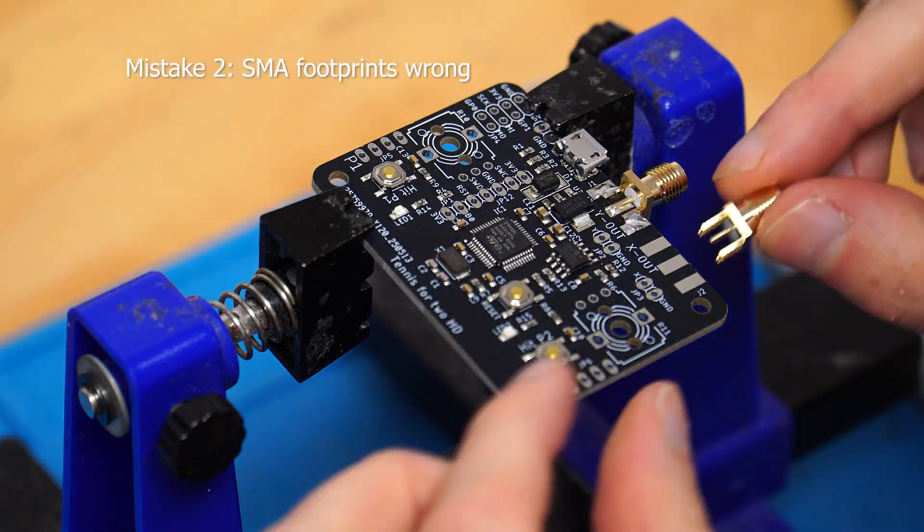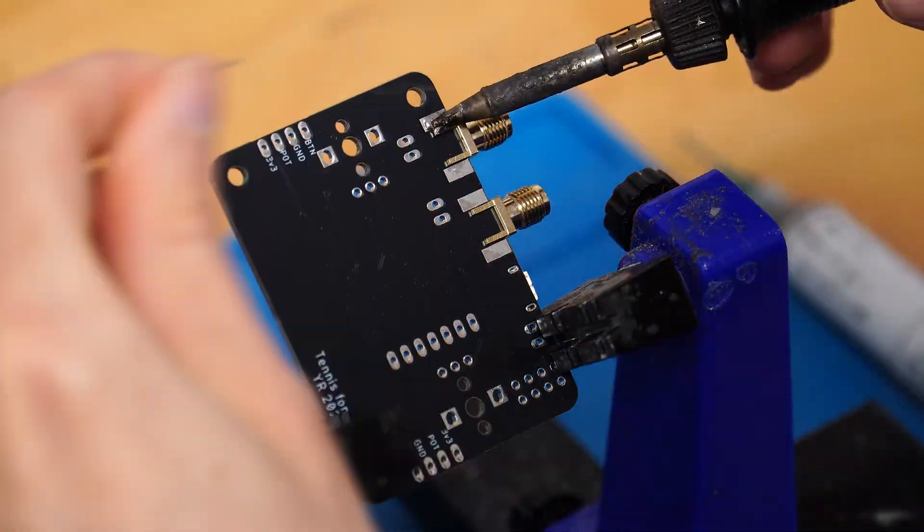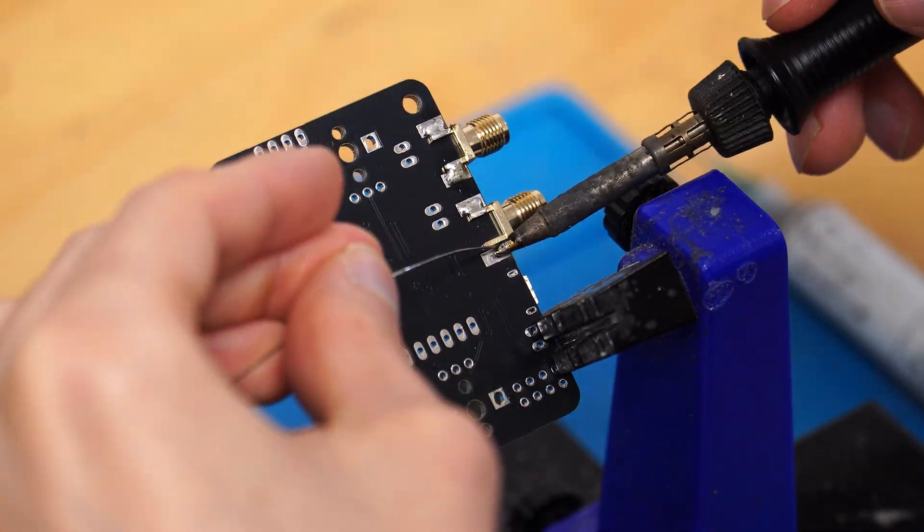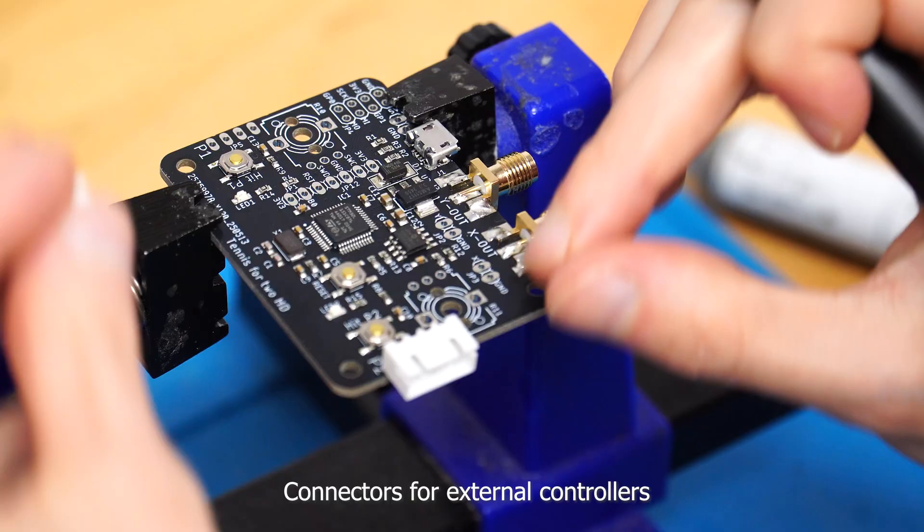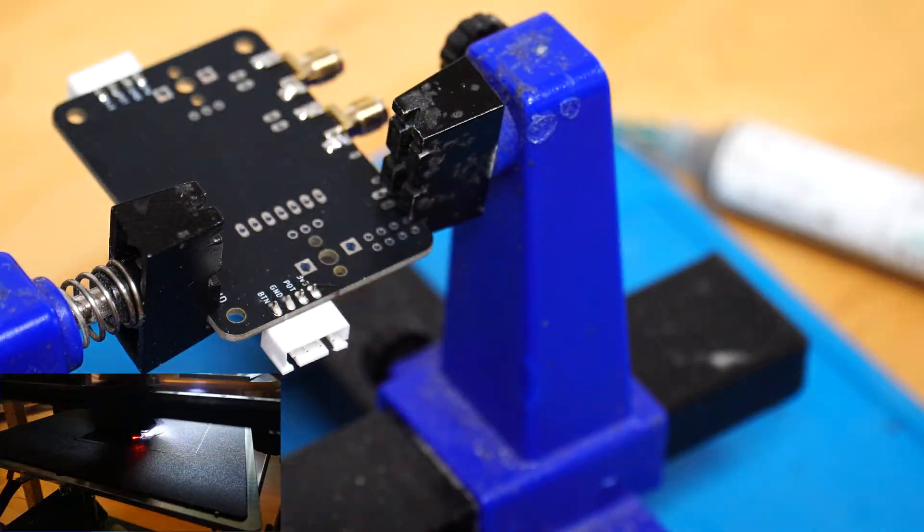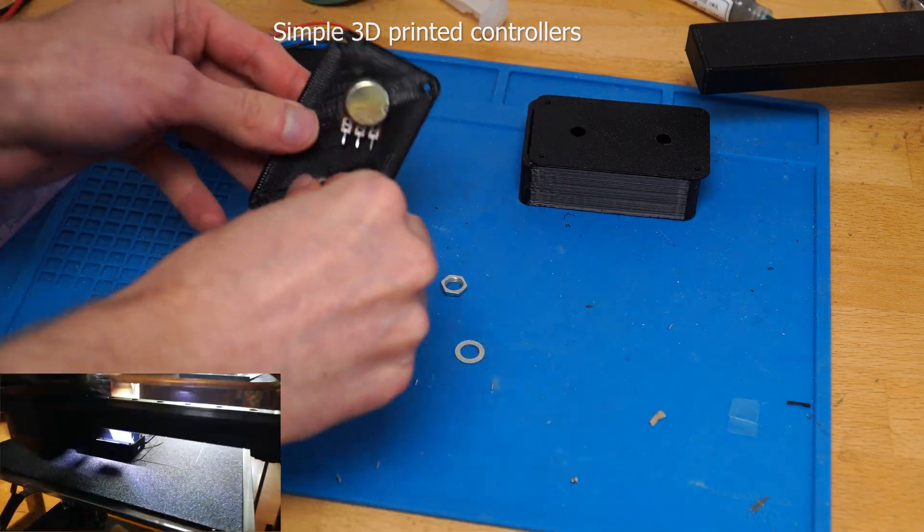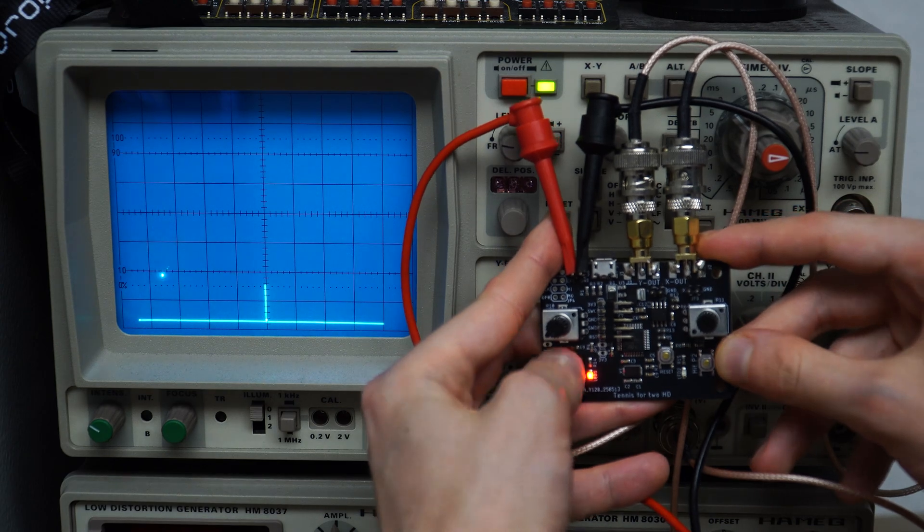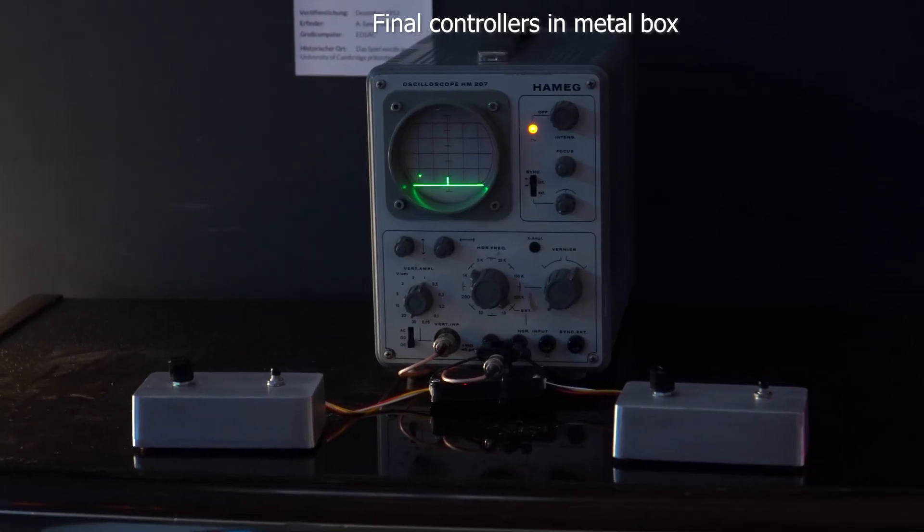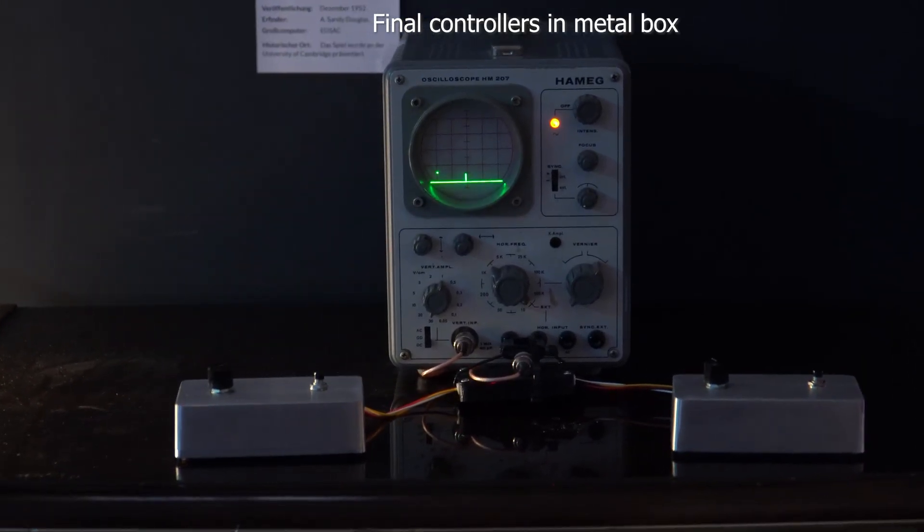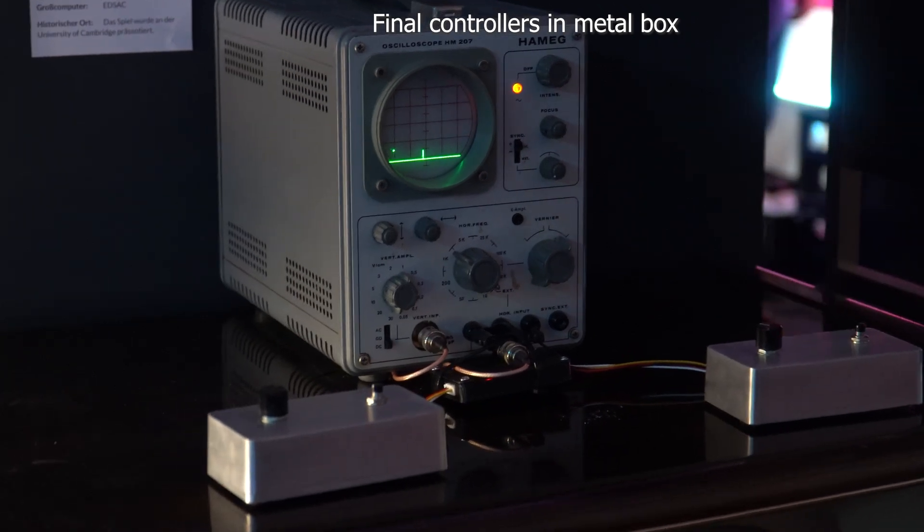The circuit has footprints for two optional potentiometers and buttons for a compact demo system or connectors for external controllers like the original, and it is also powered via USB or 5V. An integrated op-amp amplifies the weak 3.3V DAC signal to 5V and it also has two LEDs to show on which side the ball currently is. The controllers are just one potentiometer and button each and connected to the side of the mainboard. In this unit I have used 3D printed cases, but in the exhibition actual metal boxes like the original will be used.